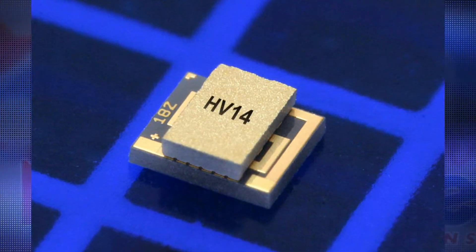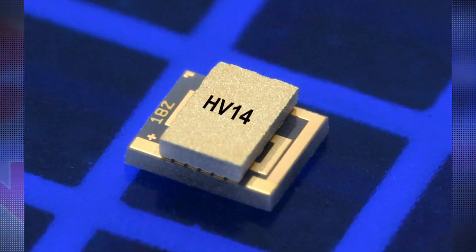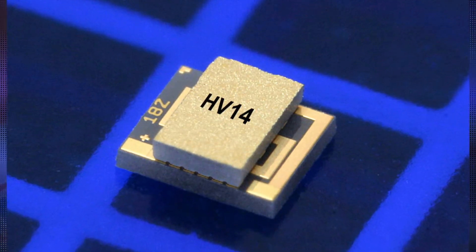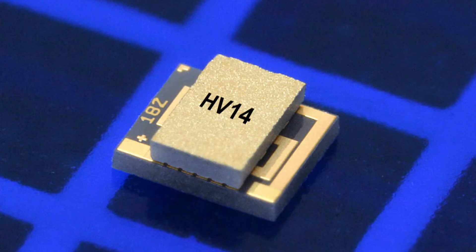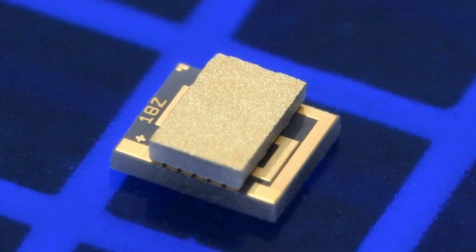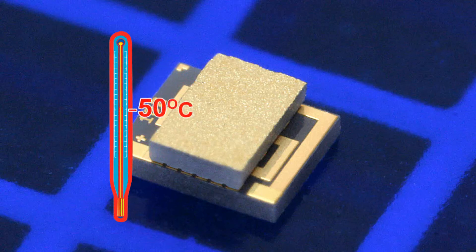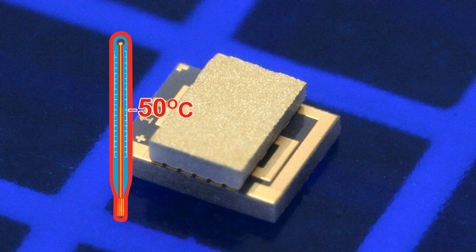The HV14 is ROHS compliant and manufactured using gold tin solder, which enables assembly temperatures as high as 320 degrees Celsius. The TEC can create a temperature differential of up to 50 degrees Celsius between its hot and cold sides, making it well suited for the temperature control of laser diodes.